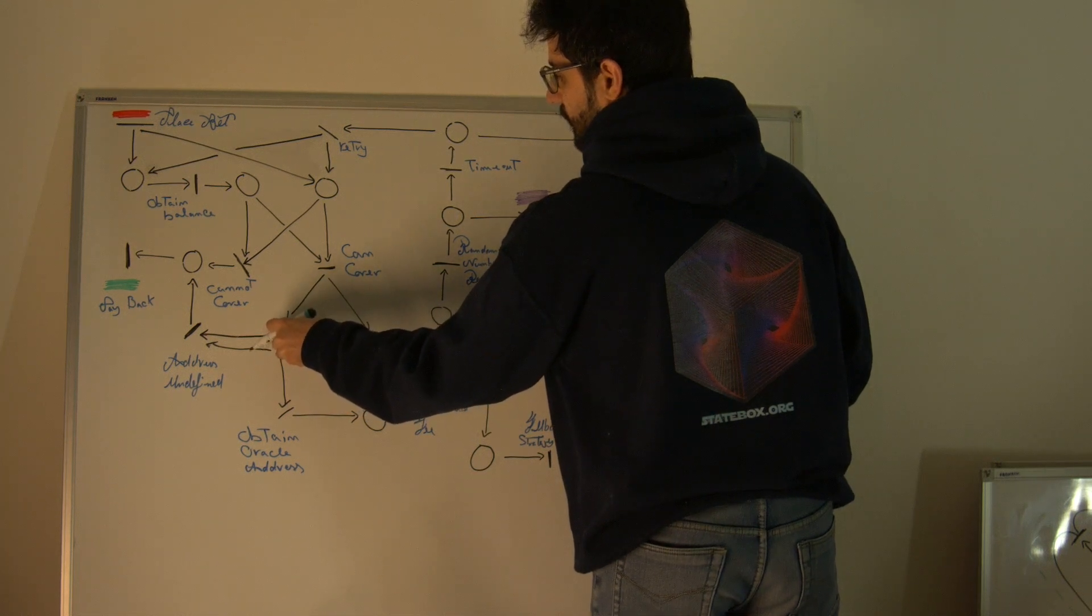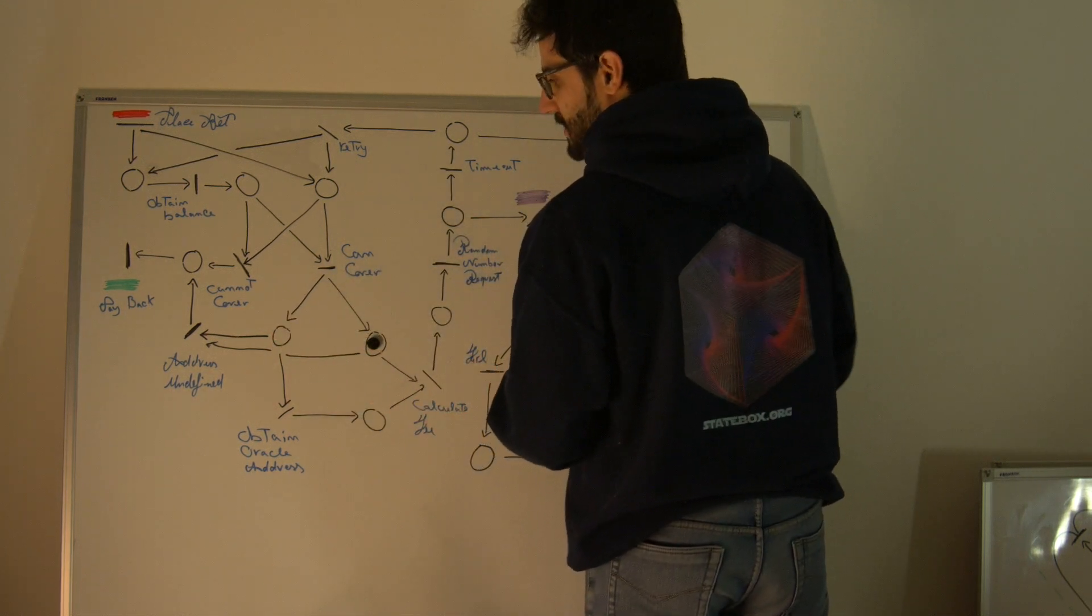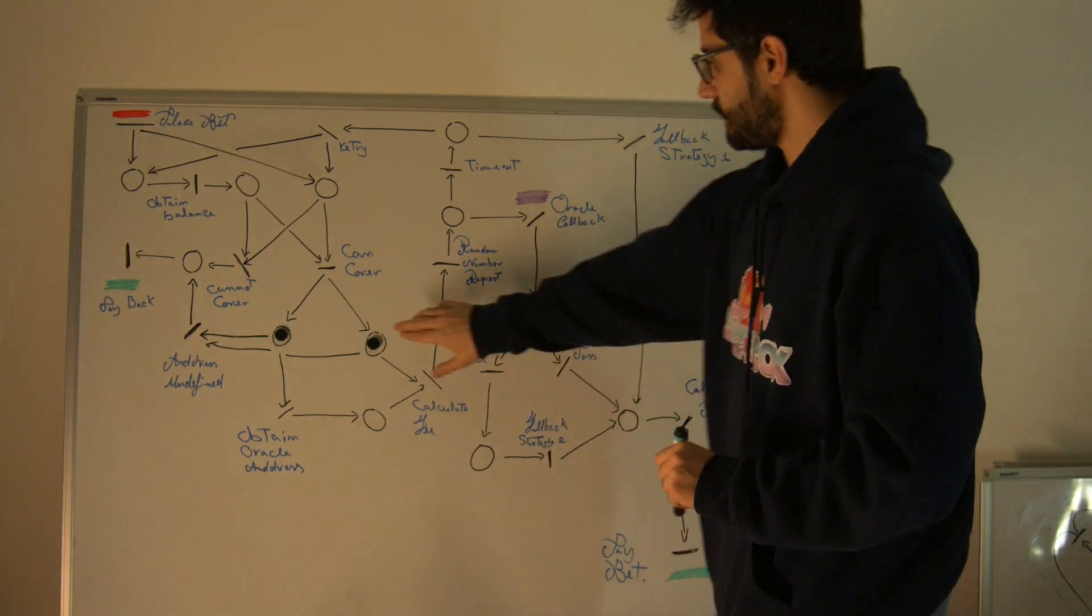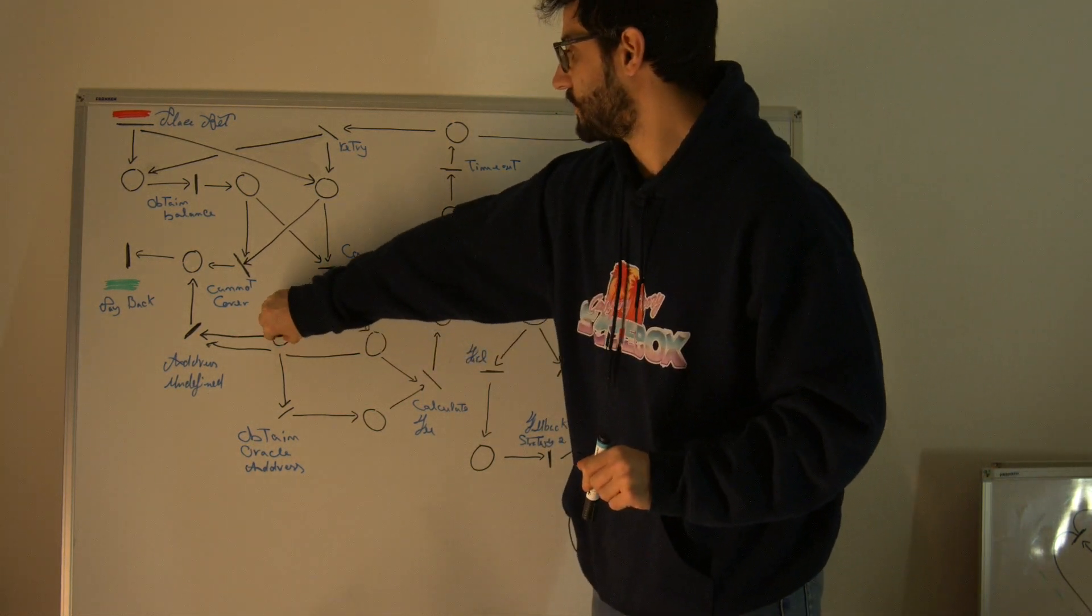So you can see that probably a more correct way of implementing this is like this. When the address is undefined, the bet is automatically burned. Now we get rid of this and everything is fine.